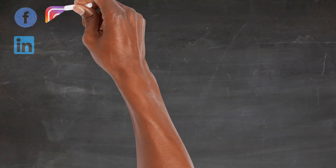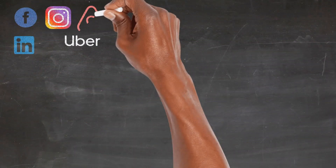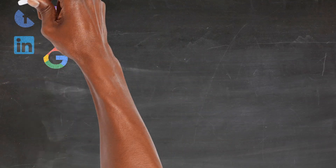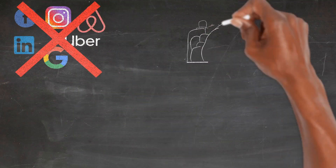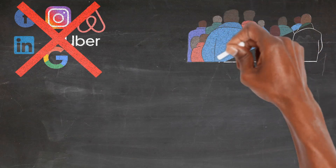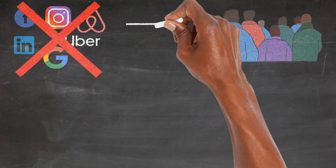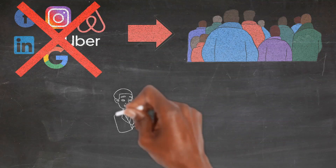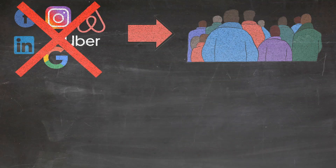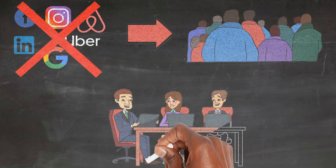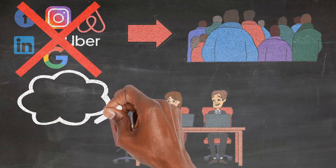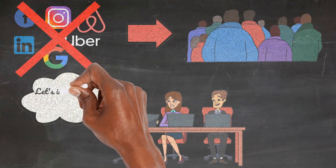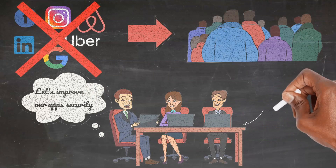What do most of the applications we use — ranging from Facebook, LinkedIn, Instagram, Uber, Airbnb, Google, etc. — have in common? They all allow users to activate two-factor authentication. As developers, it's important for us to do everything to improve our applications' account security. Email and password combinations remain the most common form of user authentication today, whereas cyber criminals are getting more sophisticated.